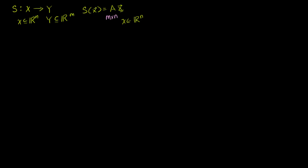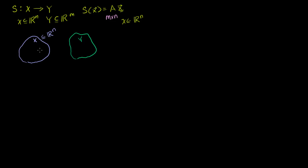Let me draw what we have so far. We have some set X, which is a subset of Rⁿ, and we have this linear transformation S mapping from X to Y. Y is a subset of Rᵐ. The matrix representation of this linear transformation is an m by n matrix, because we start with a vector in Rⁿ and end up with a vector in Rᵐ.